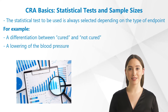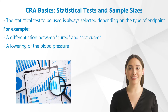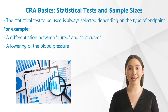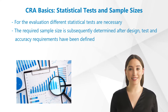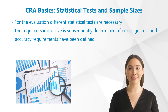The statistical test to be used in a study is always selected depending on the type of endpoint. This endpoint could be, for example, a differentiation between cured and not cured, or a lowering of the blood pressure. For the evaluation, different statistical tests are necessary. The required sample size is subsequently determined after design, test, and accuracy requirements have been defined.